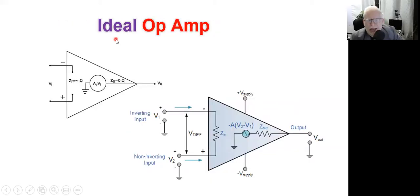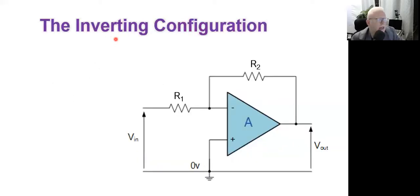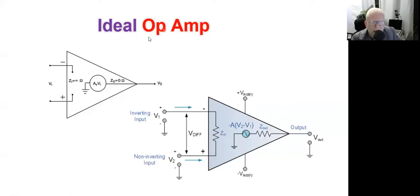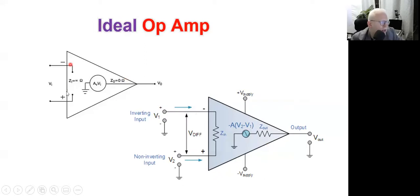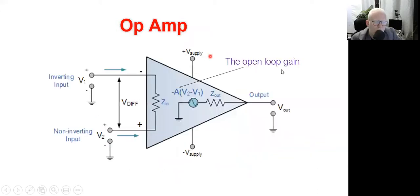Now let's build circuits using this ideal operational amplifier. The first circuit is called the inverting configuration. An important distinction: the open-loop configuration means the output terminal is not connected to any input terminal. Once you connect the output terminal to one of the input terminals, we call this a closed-loop configuration.